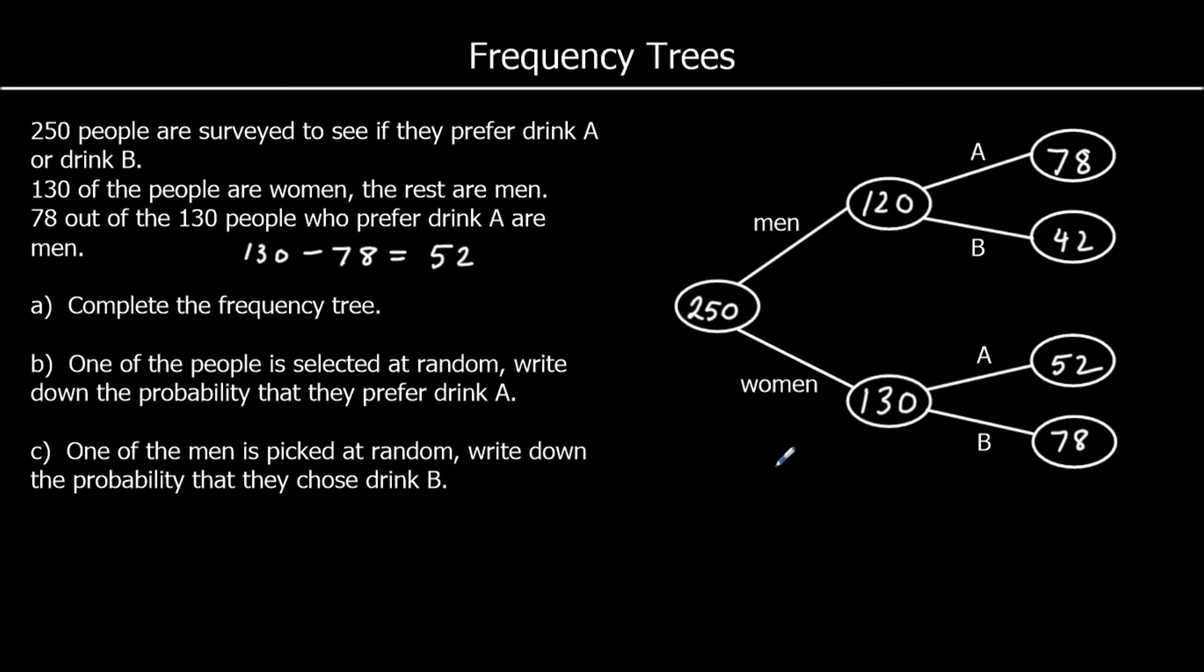Now the questions. One of the people is selected at random. Write down the probability they prefer Drink A. So how many people prefer Drink A? We were told in the question, it was 130 people. It's 78 and 52. So 130 people. Out of how many people in total? That's 250. And we don't have to simplify it. We can just leave it like this, 130 over 250.